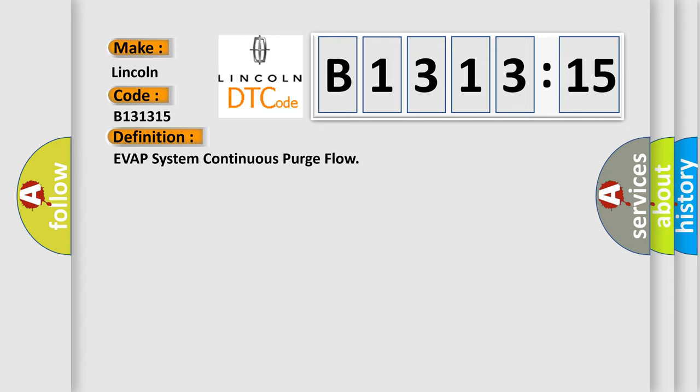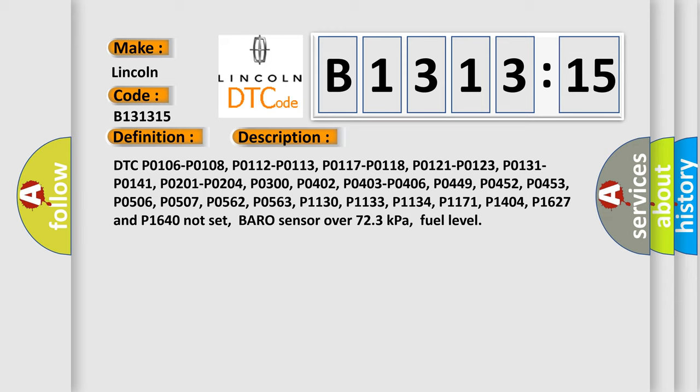The basic definition is EVAP system continuous purge flow. And now this is a short description of this DTC code.